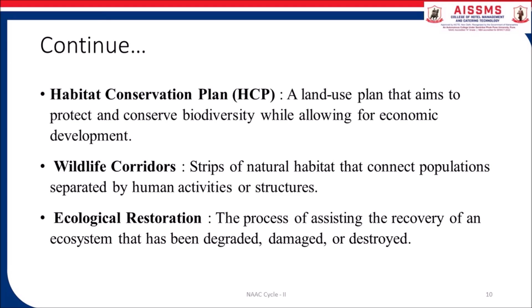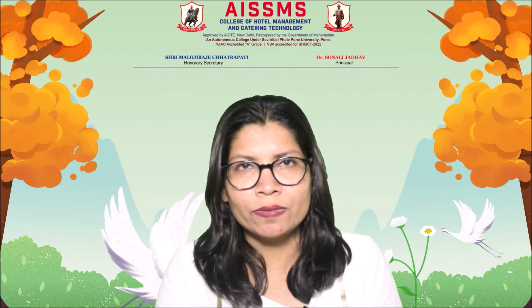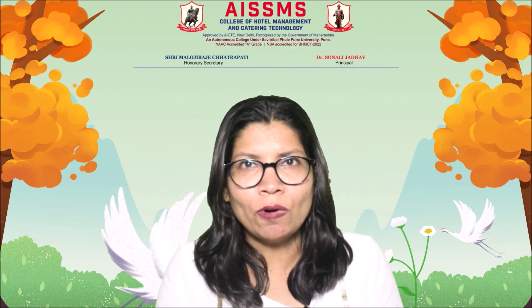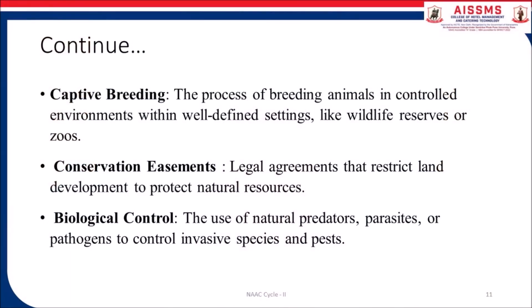Ecological restoration: the process of assisting the recovery of an ecosystem that has been degraded, damaged, or destroyed. In-situ conservation: conservation methods that involve protecting species in their natural habitats. Captive breeding: the process of breeding animals in a controlled environment within well-defined settings like wildlife reserves or zoos. Conservation easements: legal agreements that restrict land development to protect natural resources.